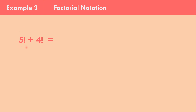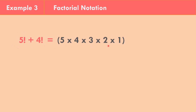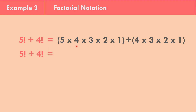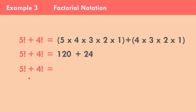How about this one: 5 factorial plus 4 factorial? The 5 factorial is equivalent to 5 times 4 times 3 times 2 times 1, plus 4 factorial which is 4 times 3 times 2 times 1. Multiplying 5 factorial: 5 times 4 is 20, times 3 is 60, times 2 is 120, times 1 equals 120. And 4 factorial: 4 times 3 is 12, times 2 is 24, times 1 equals 24. Adding 120 plus 24, the answer for 5 factorial plus 4 factorial is equal to 144.